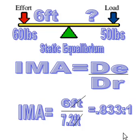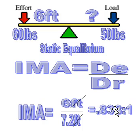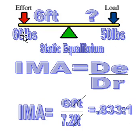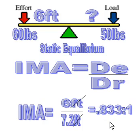What does that mean? The mechanical advantage in this case is actually a mechanical disadvantage because it's less than one. Mechanical advantage describes how much work the machine is doing compared to how much work you're having to do. Since our load side is less than our effort side, it comes out to 0.833 to one — that's a mechanical disadvantage. If it were greater than one, it would be a mechanical advantage, and if it's one, we're back to static equilibrium.